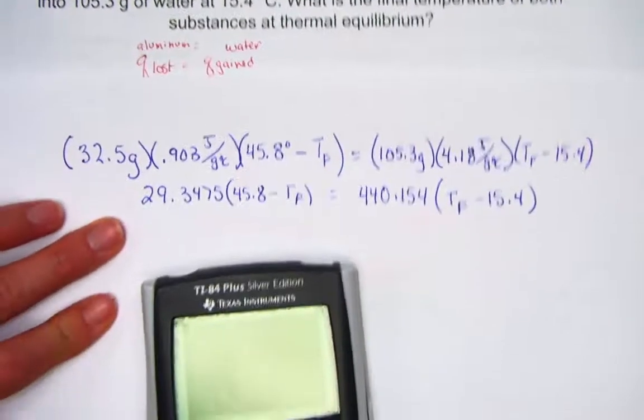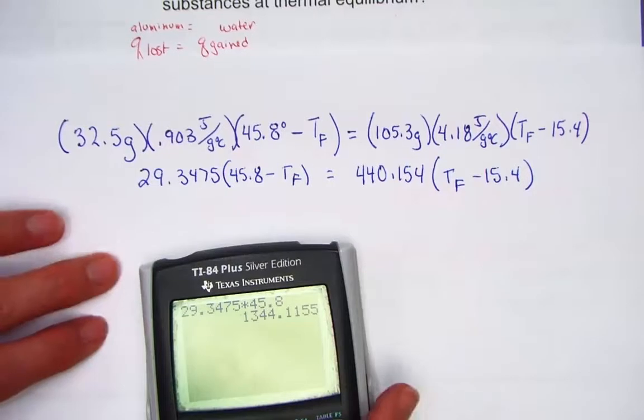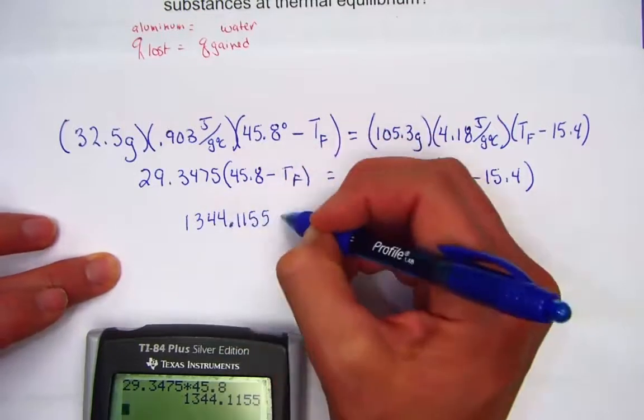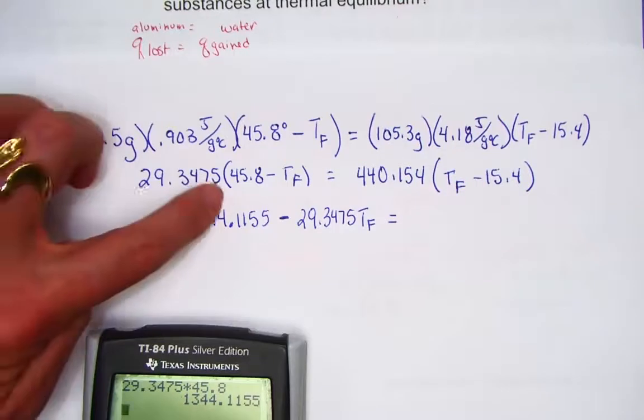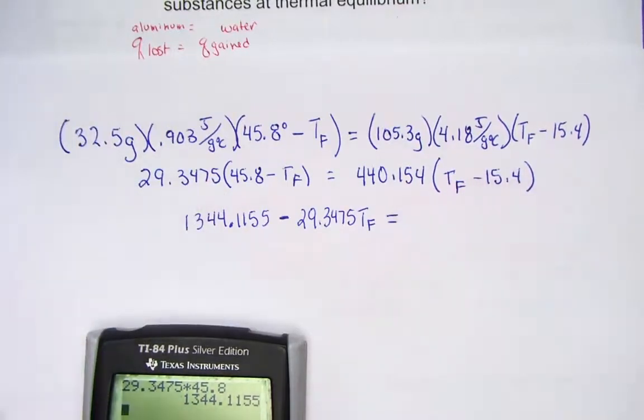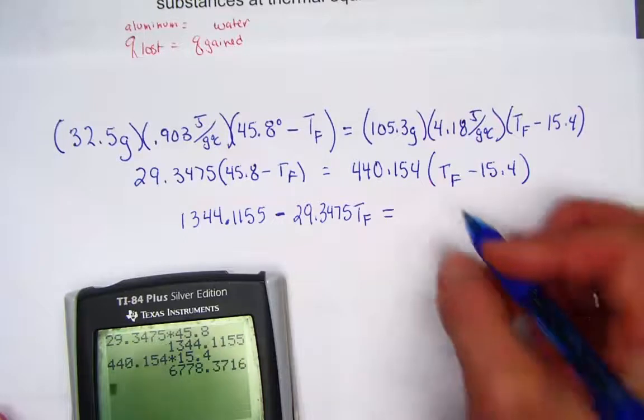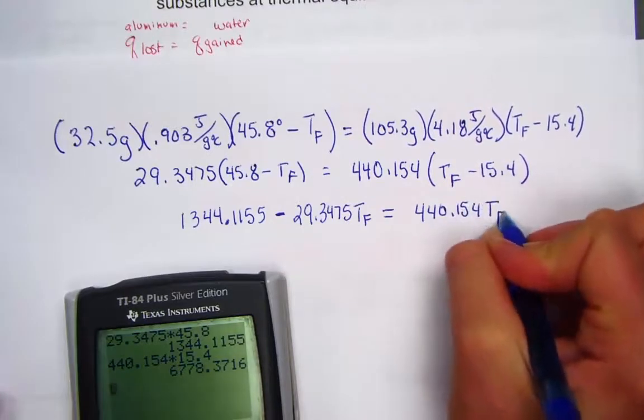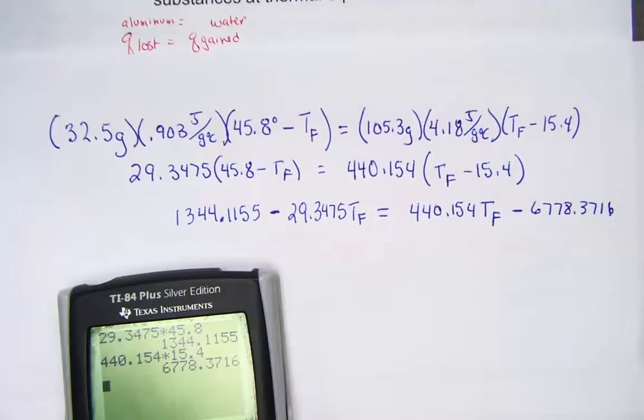Let's now distribute through our parenthesis. I'll start on the left side. 29.3475 times 45.8 gives me 1344.1155 minus 29.3475 final temperature. I distributed through the parenthesis. Same strategy on the other side of the equals. 440.154 times 15.4. And this is what we'll write on the right side of our equals. We have 440.154 Tf minus 6778.3716. Again, just distributing through the parenthesis.